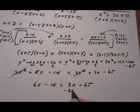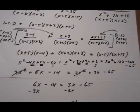Let's take away 3x on both sides. That leaves us with 3x minus 14 equals minus 65.